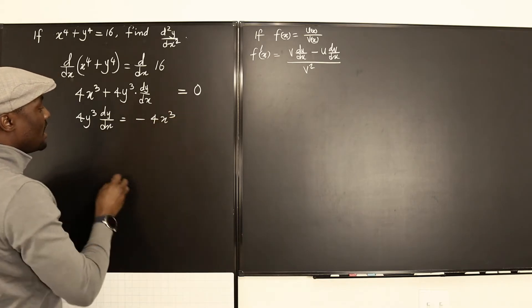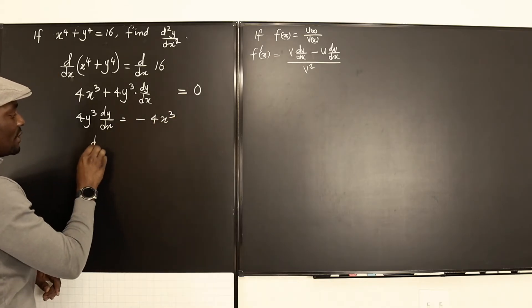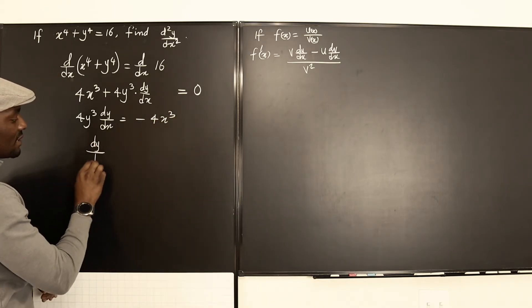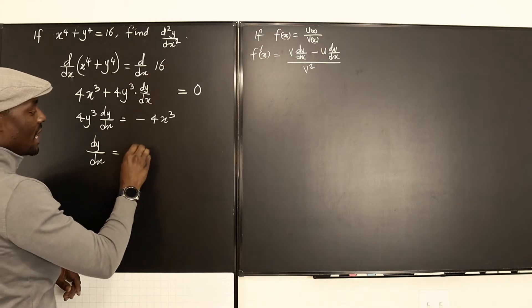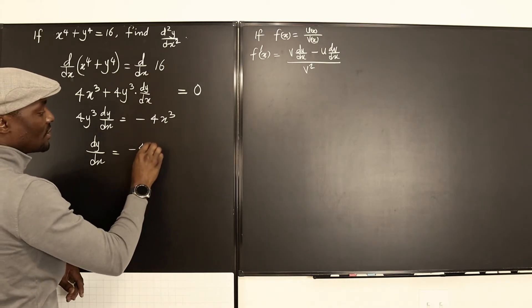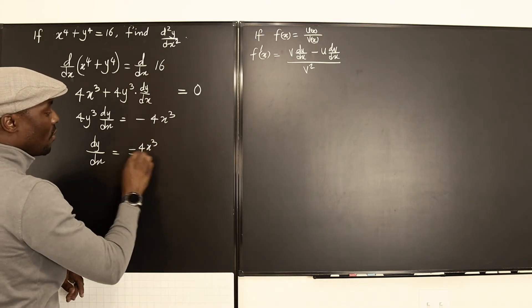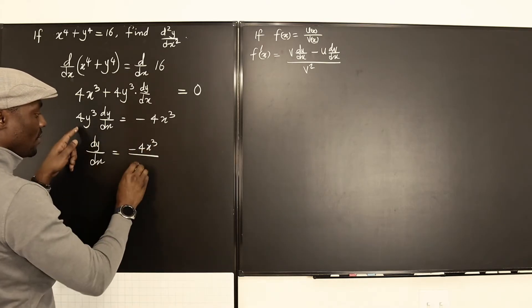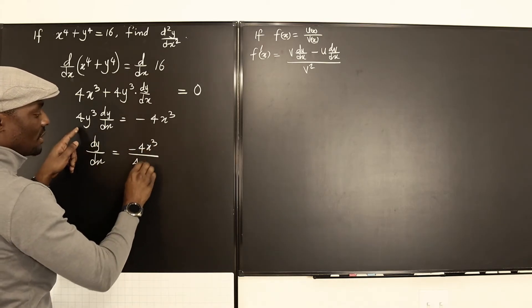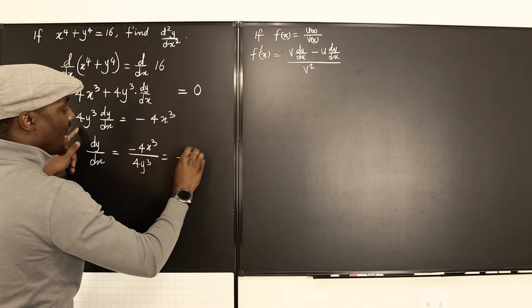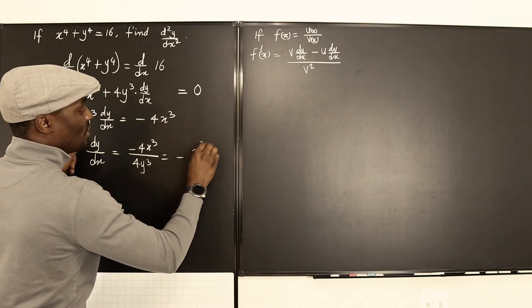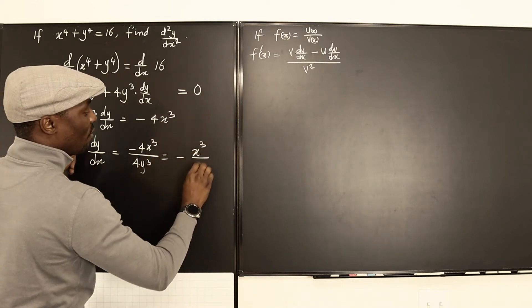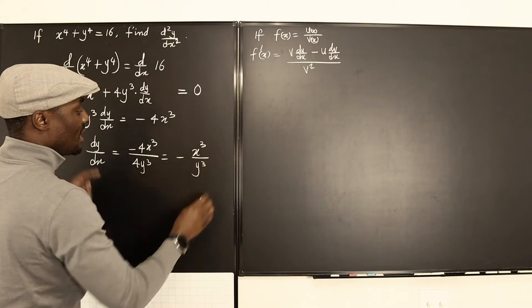Now let's isolate dy/dx. We have 4y cubed times dy/dx equals negative 4x cubed, and then dy/dx equals negative 4x cubed over 4y cubed, which gives us negative x cubed over y cubed.